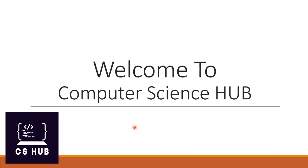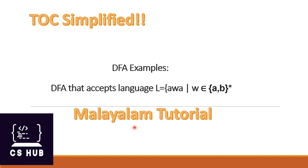Hello everyone, welcome to another video of Computer Science Hub. Today's topic is an example of DFA. So far we were discussing about some examples of a Deterministic Finite Automata. Our subject is Theory of Computation. Today we are going to discuss the question: design a DFA that accepts the language L = {awa | w ∈ {a,b}*}.